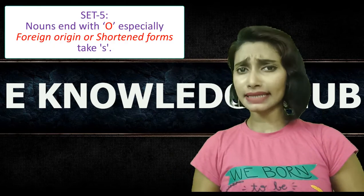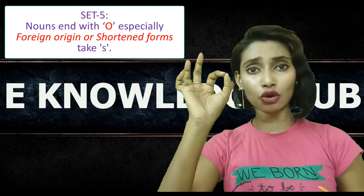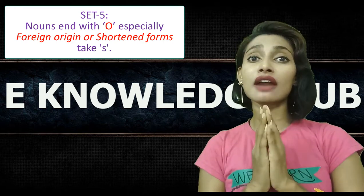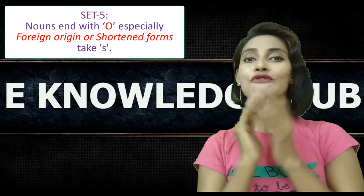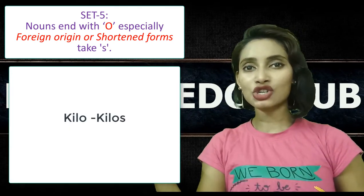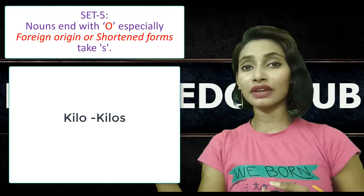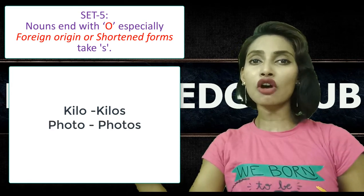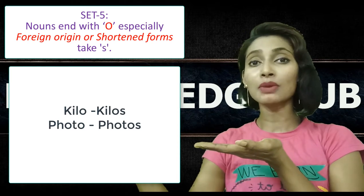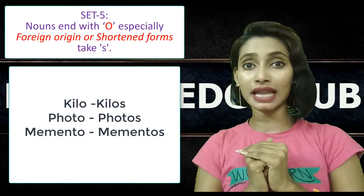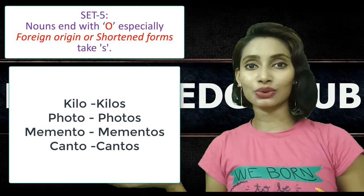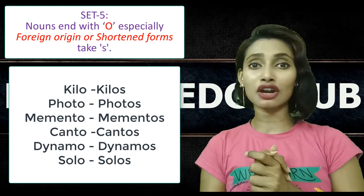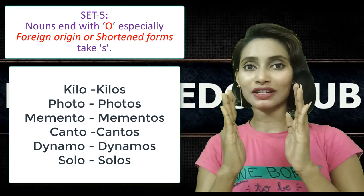But look at set 5. In set 5 also the nouns end in letter O but they take only S. Why? These are nouns of foreign origin or shortened forms. For example, kilo is a shortened form for kilograms or kilometers and its plural is kilos. For photo, the plural form is photos. And other foreign origin words like memento, canto, dynamo, dynamos, solo, solos. These are the nouns under set 5 which are of foreign origin or shortened forms.